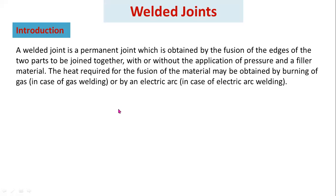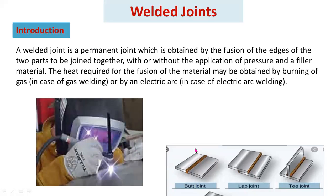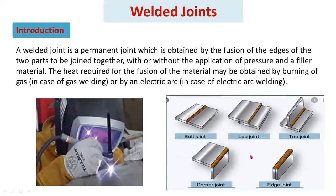Now coming to welded joints introduction: a welded joint is a permanent joint which is obtained by the fusion of the edges of the two parts to be joined together, with or without the application of pressure and a filler material. The heat required for the fusion of the material may be obtained by burning of gas or by an electric arc.